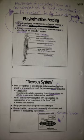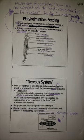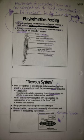With regard to their nervous system, even though they're acoelomates, platyhelminthes do have primitive organ systems for all life processes except circulation and respiration. Circulation and respiration are achieved through internal diffusion and diffusion of gases across the body's surface, respectively. They have a bilateral nervous system with cephalization — a concentration of nervous tissue at the head end, which appears like a primitive brain and nerves. Many species exhibit eye spots sensitive to light. They are hermaphroditic and can reproduce sexually, although they almost never self-fertilize, or they can reproduce asexually by regeneration.